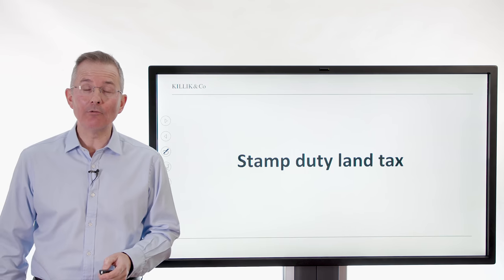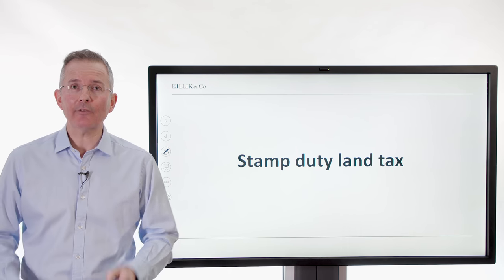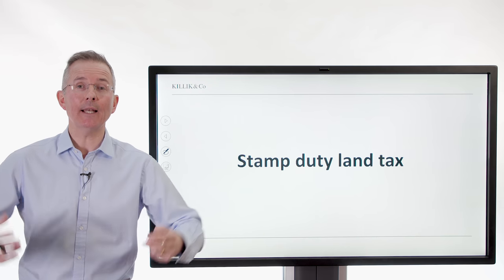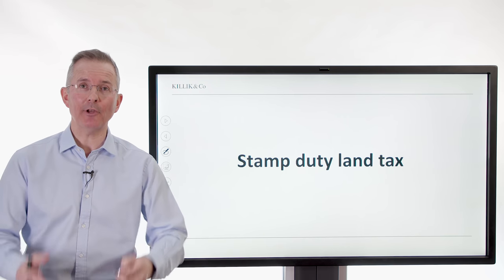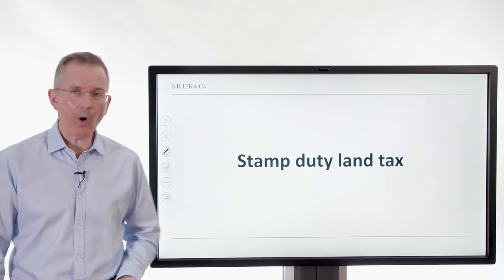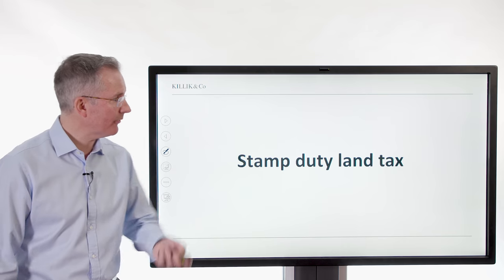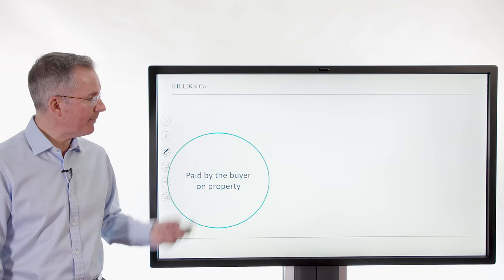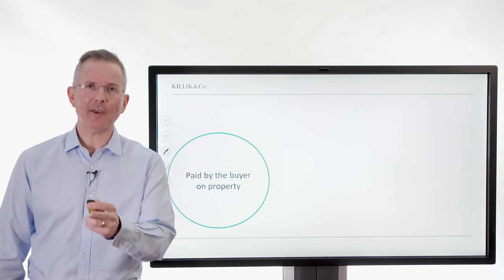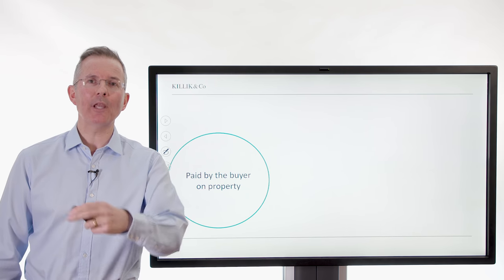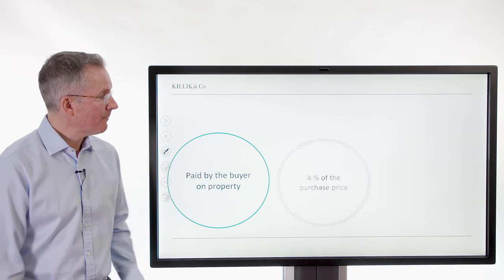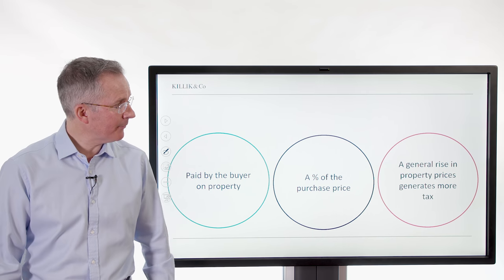In no particular order, stamp duty land tax. I picked this one because most people at some point in their lives buy at least one property, so this will hit you in some way, shape or form. Basically, it's paid by the buyer on a property — the buyer pays a fixed percentage of the value of the property to HMRC. That's dead money; you don't get it back. It's a percentage of the purchase price.